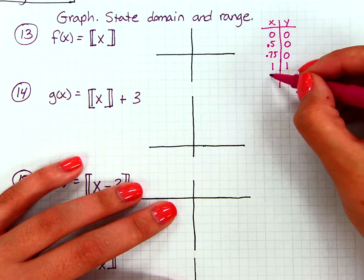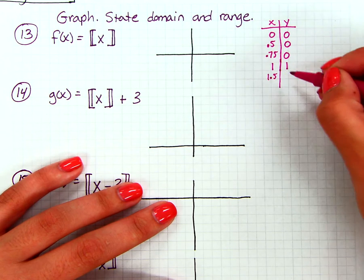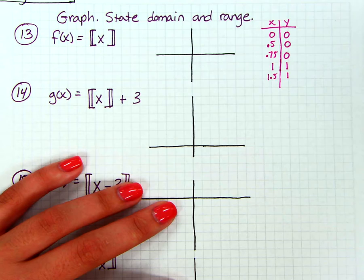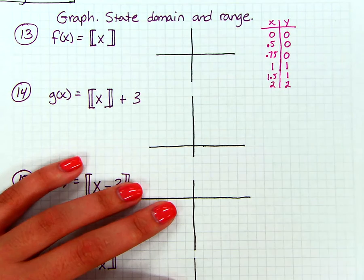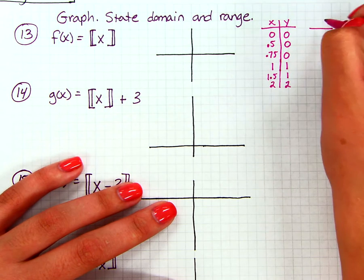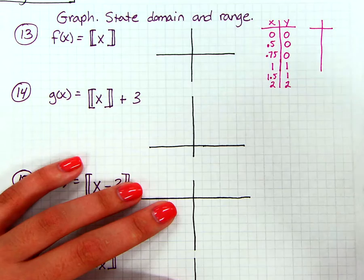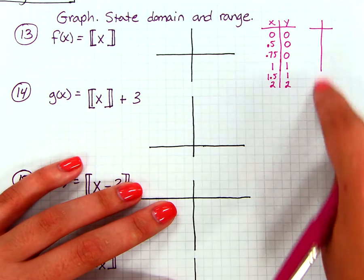And then again, as I'm picking, if I pick 1.5, that's still 1. So my next change isn't going to be until I choose my next integer, so 2. And then my y value would jump up. And that's going to be true on the negatives. So I'm going to extend my t-chart over here. So this is still the same t-chart, I just ran out of room down here so I'm rewriting it over here.